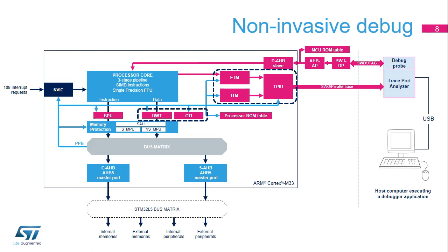The trace port analyzer is generally contained in the same device as the debug probe. Two interfaces are supported to transfer trace packets to the TPA: either the asynchronous single-wire output, or SWO, or the synchronous parallel trace port. An overflow condition occurs when a contention is detected in the TPIU, meaning the bandwidth of the trace port is not large enough to export all trace packets. Note that trace packets are time-stamped in the ITM and ETM modules. The DWT and CTI can be used to define trigger conditions to start and stop the ETM trace.